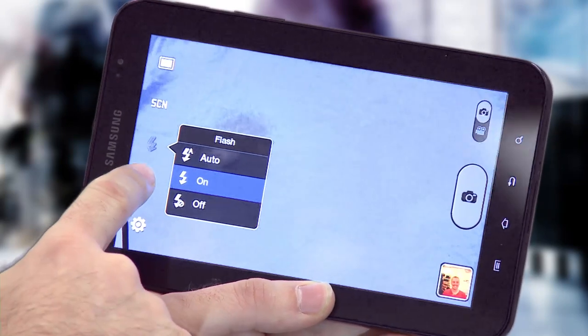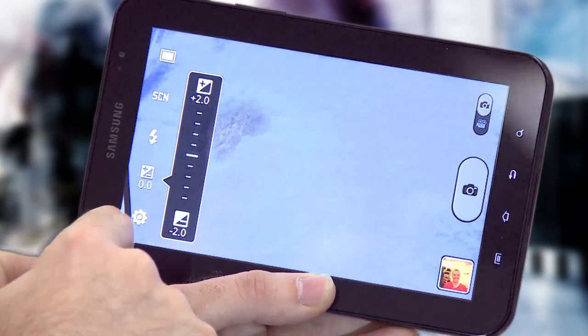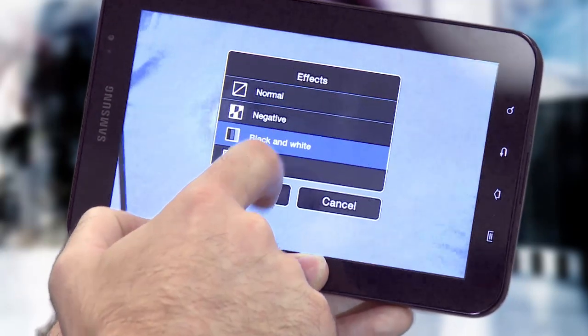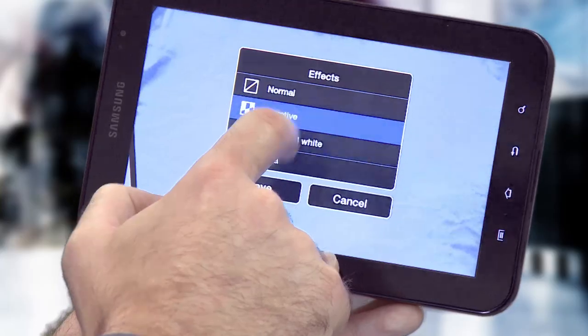And in settings, you can even change the white balance and add some effects, such as a negative photograph, black and white, or sepia.